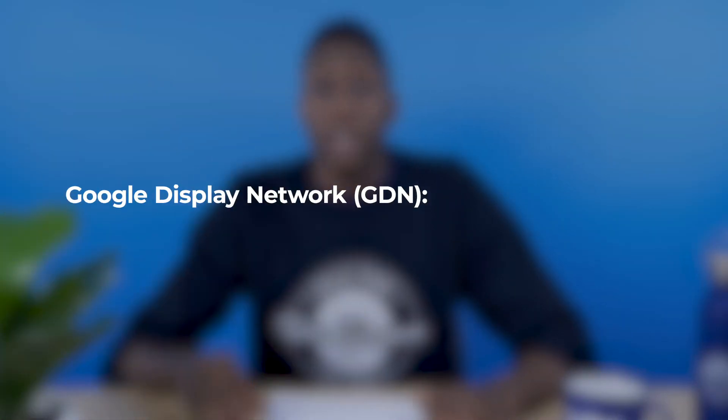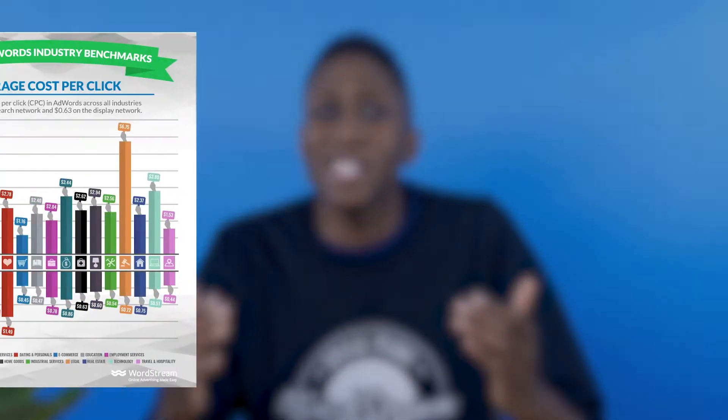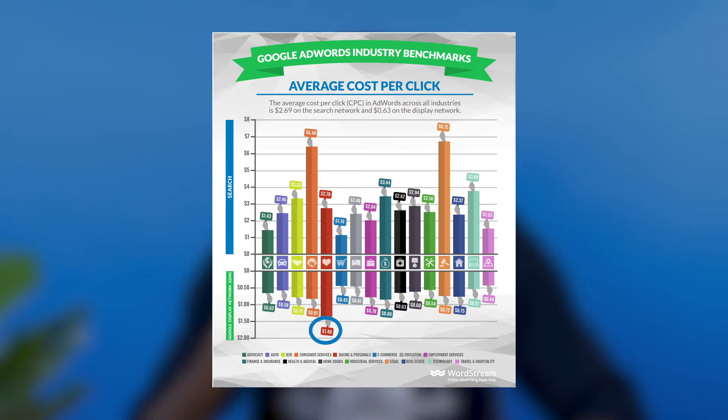Let's talk about the other side of Google's ad networks: the Google Display Network, or GDN, which offers unparalleled reach for advertisers at the expense of lower click-through rates. While ads on the Google Search Network appear on Google SERPs, display ads appear on any website partnered with Google. The GDN spans the vast majority of the indexable web. The average cost per click on the Google Display Network is lower than high-intent searches, coming in at $0.63. The overall range stays pretty consistently around $1, from a low of $0.44 in travel and hospitality to $1.49 in the dating category.